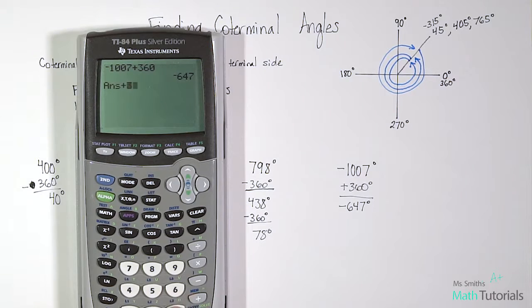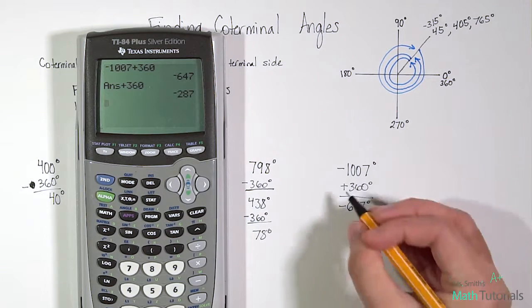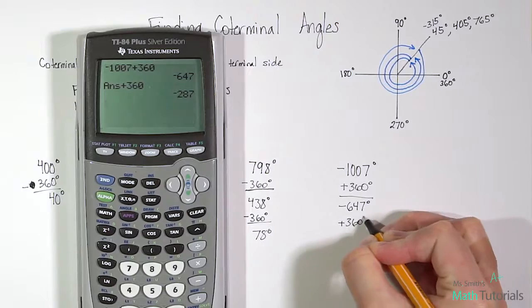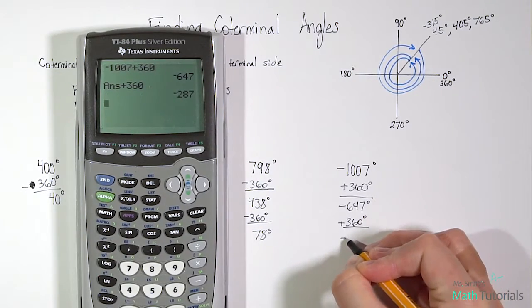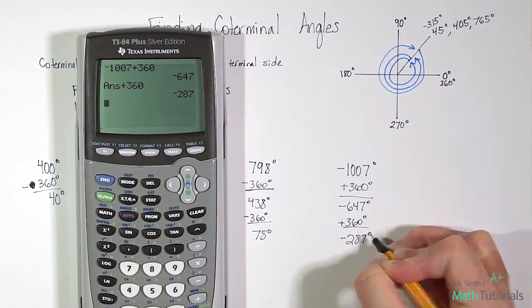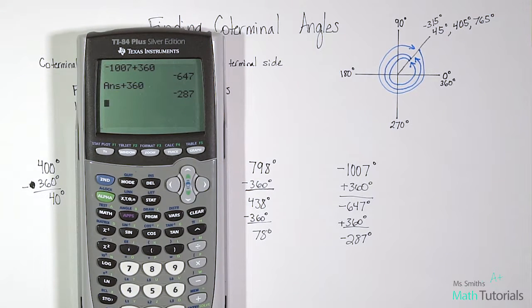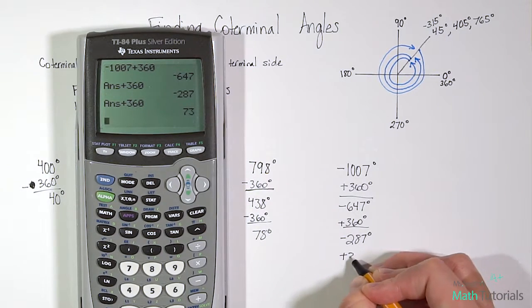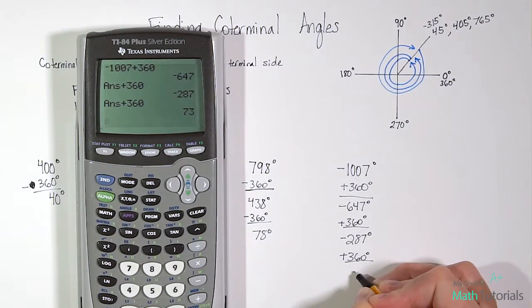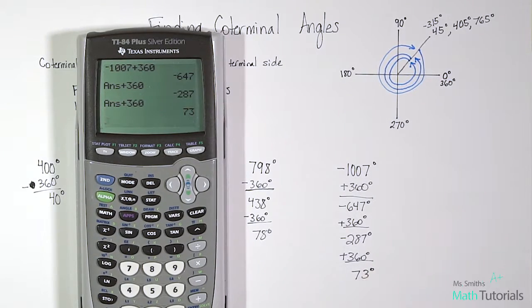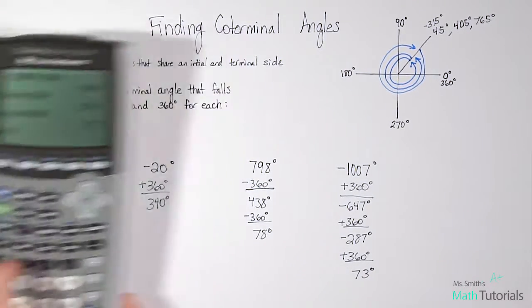But we're still not in that zero to 360 range. So let's add 360 again. Okay, we're a little better now, right? We added 360 again and now we're at negative 287 degrees. So we're getting closer, but we're still not there. We need to add 360 again. Finally, we are in the positives. We're in that range of zero to 360 with 73 degrees.